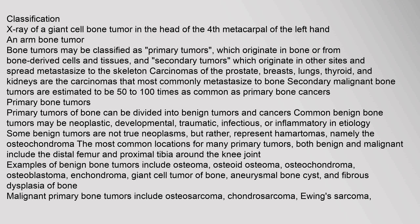Primary tumors of bone can be divided into benign tumors and cancers. Common benign bone tumors may be neoplastic, developmental, traumatic, infectious, or inflammatory in etiology. Some benign tumors are not true neoplasms but rather represent hamartomas, namely the osteochondroma. The most common locations for many primary tumors, both benign and malignant, include the distal femur and proximal tibia around the knee joint.